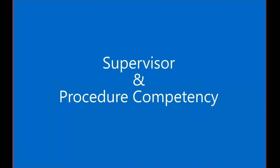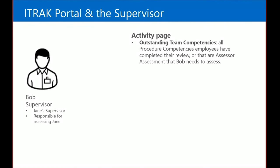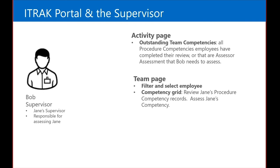Now we're going to look at the supervisor perspective. Bob is our supervisor and he's responsible for assessing Jane. In the portal, he uses his activity page and has a grid called 'Outstanding Team Competencies.' All procedure competencies that employees have completed their review on will appear here, as well as any assessor assessments Bob needs to complete. He also has a team page where he can filter and select employees, review their procedure competencies, and assess from that page.